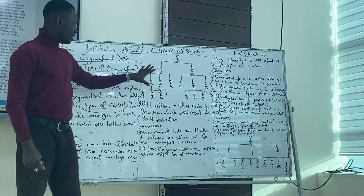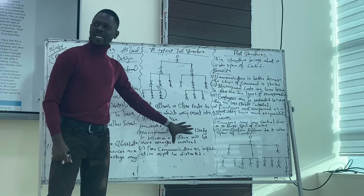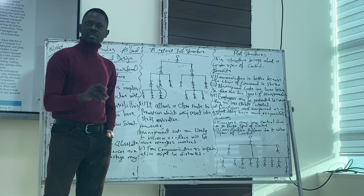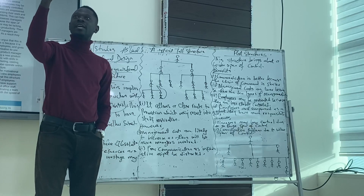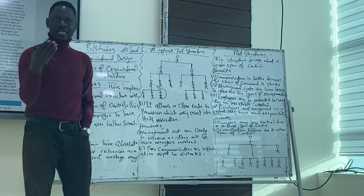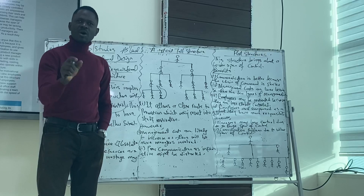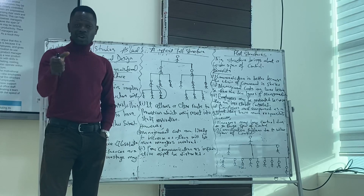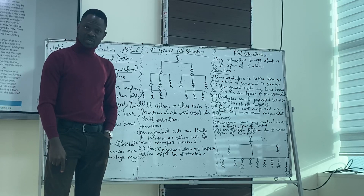The problems with using a tall structure: first, management costs are likely to increase. Management cost is likely to increase because you have a lot of managers in the organization. When you have a lot of managers, you have to pay them more, as managers get paid better than subordinates. So more managers means higher management costs, which reduces profit for the business.